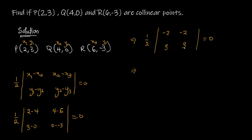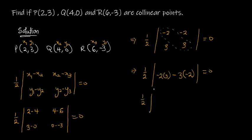Now solving the 2×2 matrix to find the determinant, we multiply the leading diagonal first and subtract the other diagonal. So we have one-half times [(-2 × 3) minus (3 × -2)] equal to zero. That gives one-half times [-6 minus (-6)], which is one-half times [-6 + 6], and -6 + 6 is 0. Multiplied by one-half, it is still 0, so this equals zero.